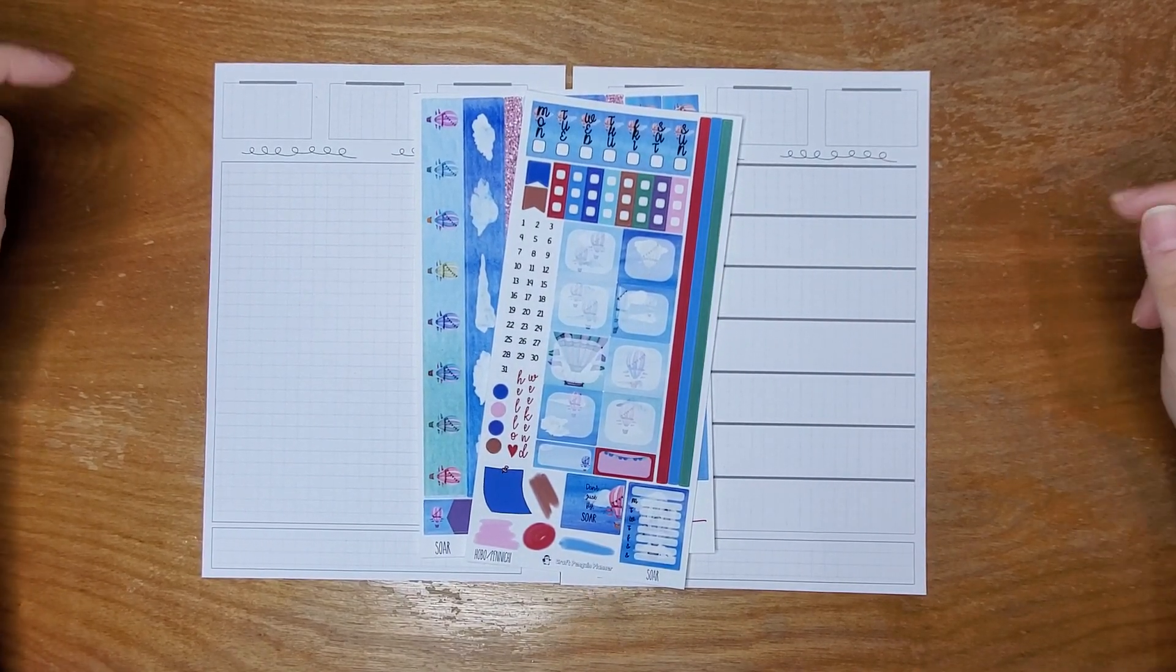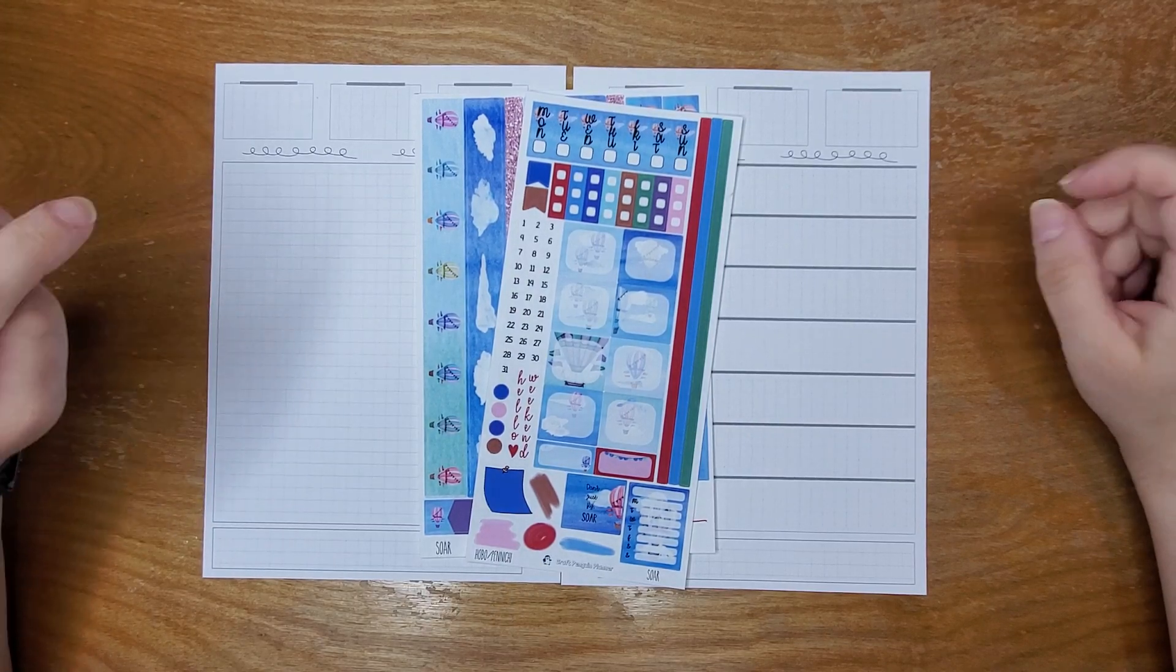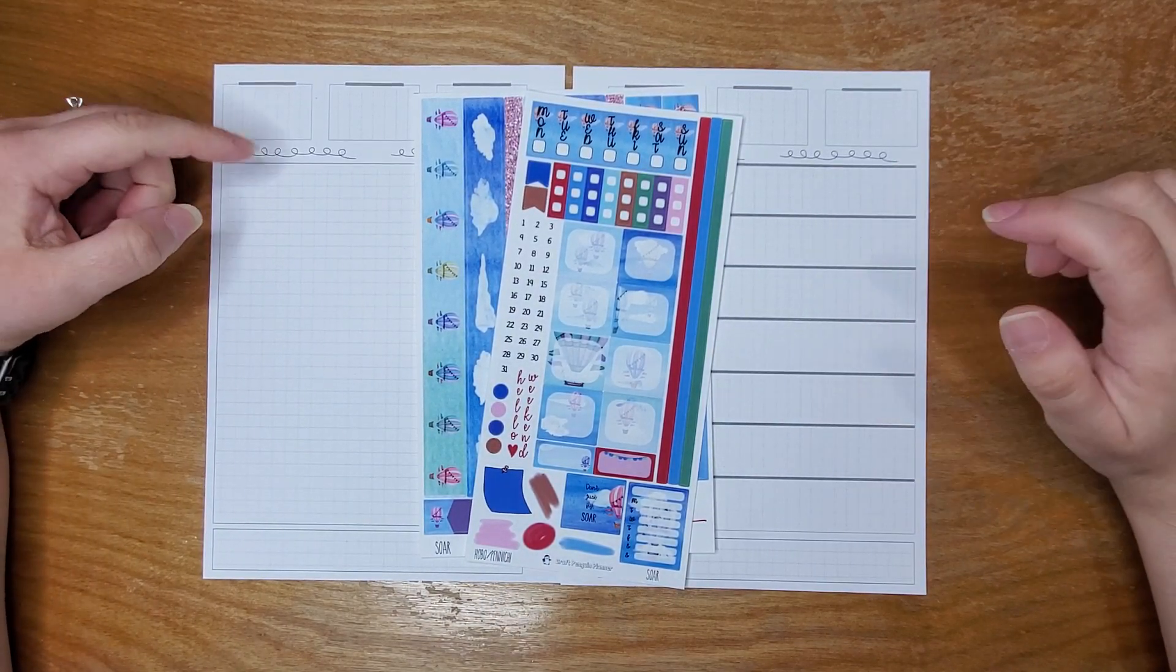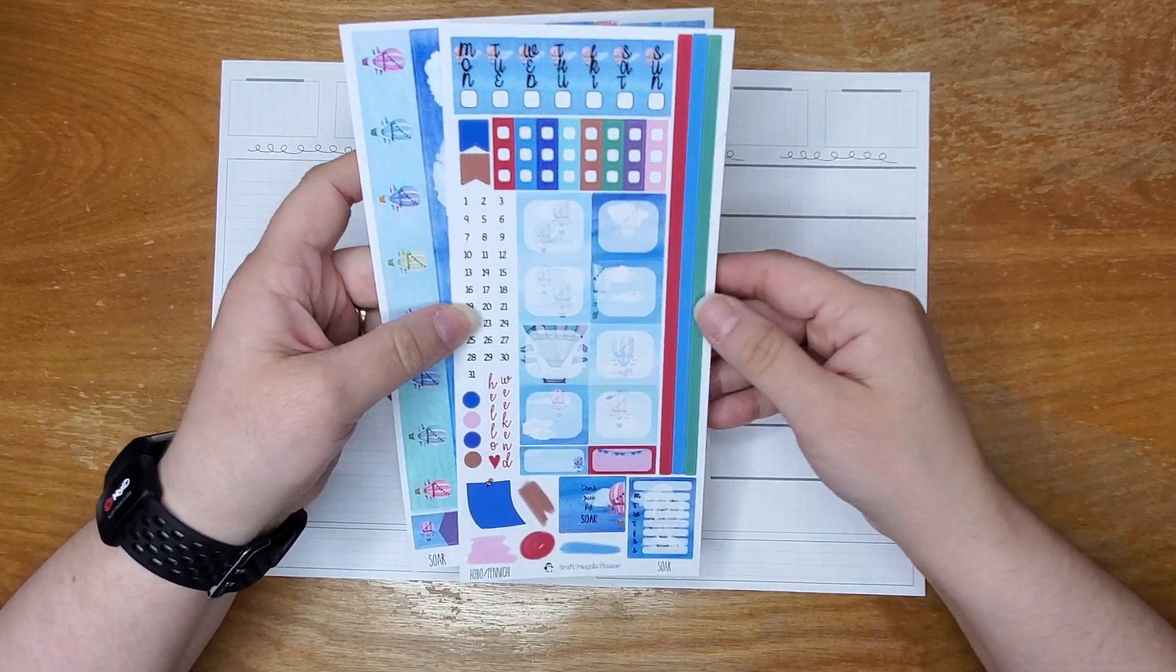Hey guys, Jen here from Craft Penguin Planner. Welcome to my channel. Today we are planning the week of June 12th through the 18th in my Panichi and we're using the Soar kit from my shop.